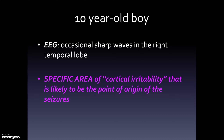Returning to the case of the 10-year-old boy, he had an EEG that showed occasional sharp waves in the right temporal lobe. Those sharp waves indicate an area of cortical irritability. The cortex is the outer layer of the brain and is the part that very often gives rise to seizures. Based on the EEG finding, it seemed very likely that was the area of origin of the seizures.